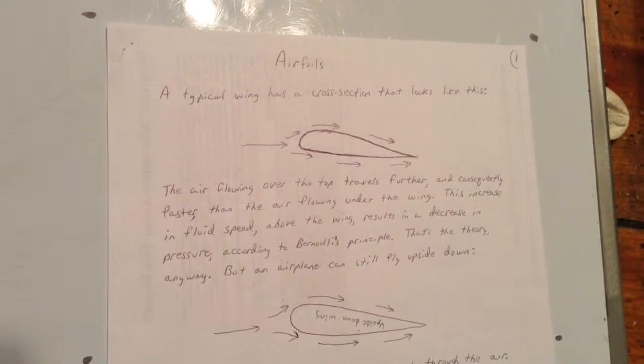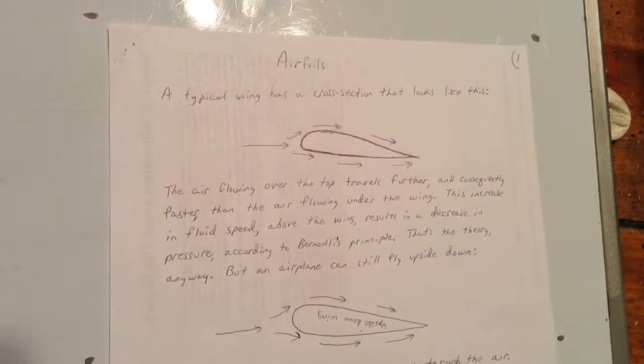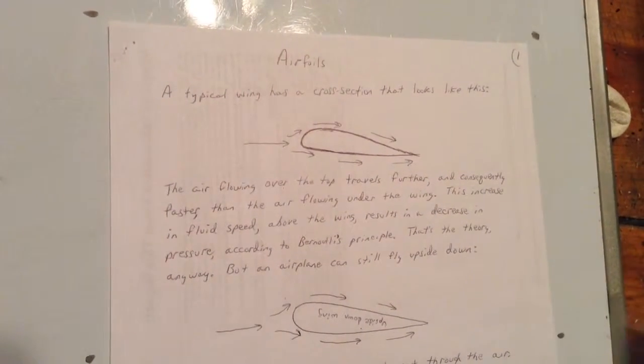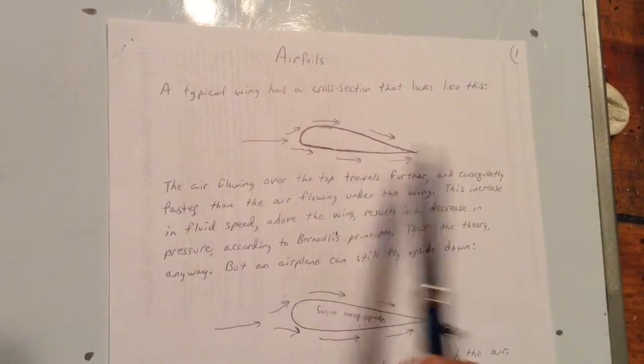This is the airfoil section of our aeronautical engineering lesson, part one. A typical wing has a cross section that looks like this.